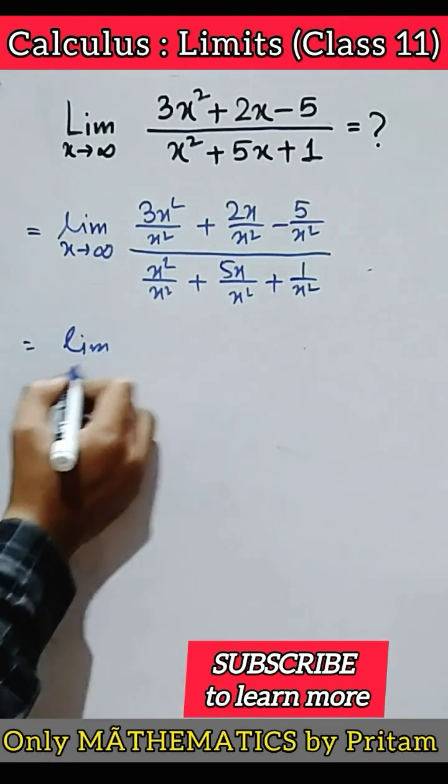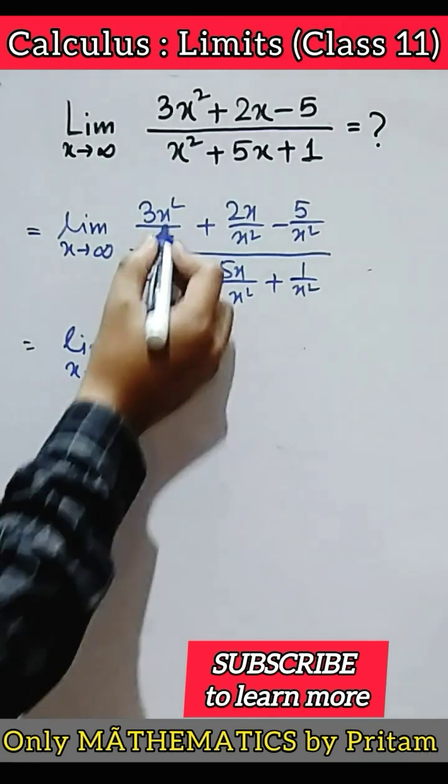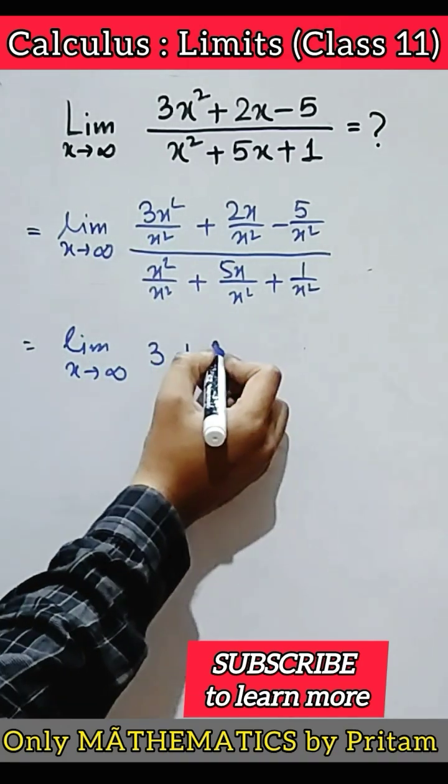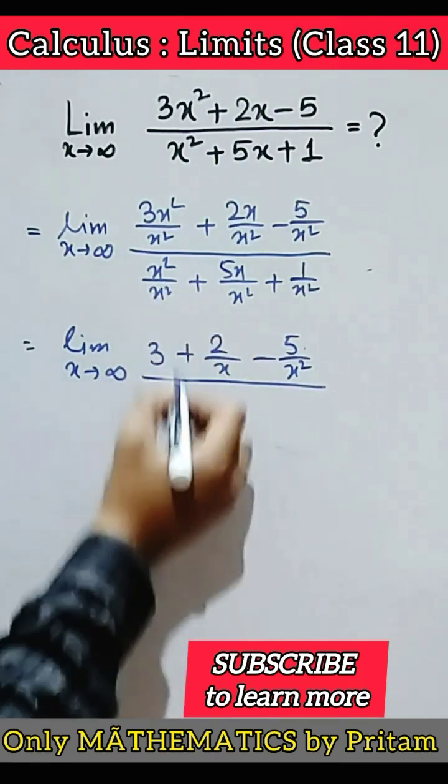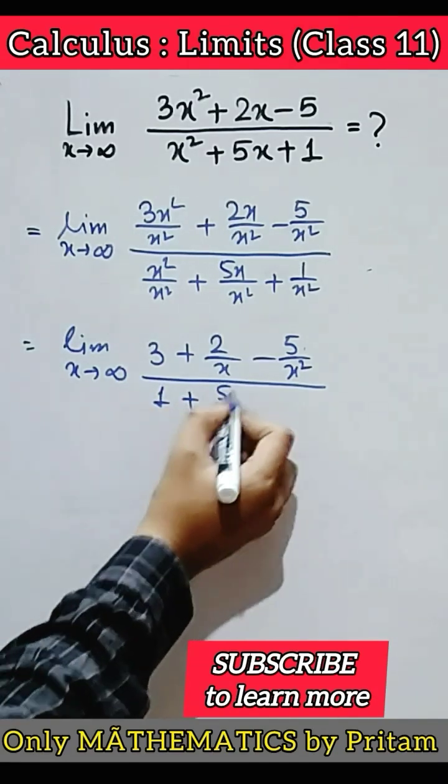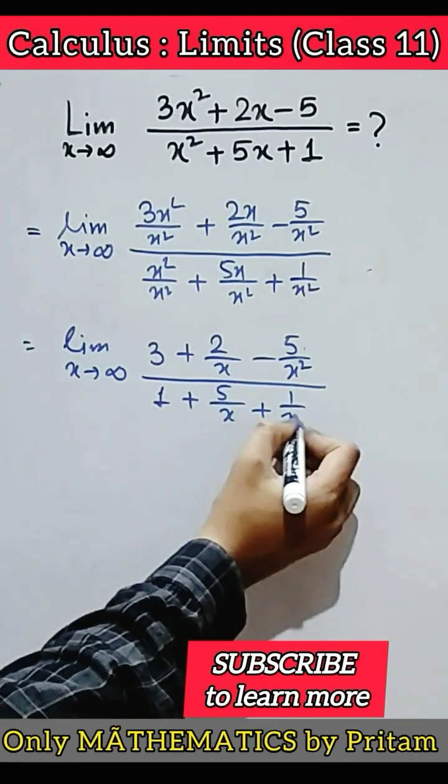Now limit x tends to infinity. This one is 3 plus 2 by x minus 5 by x square by 1 plus 5 by x plus 1 by x square.